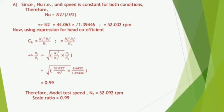Using the head coefficient expression: Ch = n1² d1² / h1 = n2² d2² / h2, which implies d1/d2 = √(n2² / n1²× h1 / h2), where n2 and h2 belong to the model and n1 and h1 belong to the turbine. Substituting, d1/d2 = 0.99. Therefore model test speed n2 = 52.092 rpm and scale ratio = 0.99.